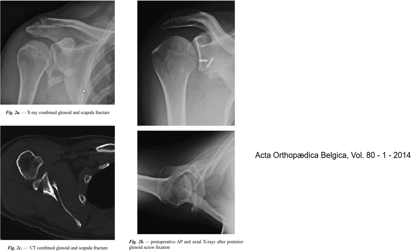Image 2A shows a combined glenoid and scapular fracture in this area. Image 2B shows the postoperative AP and axial X-ray of the posterior glenoid screw fixation — as you can see, it is fixation with two nails. Image 2C is a CT of the combined glenoid and scapular fracture, showing this small fracture and this particular fracture fragment.